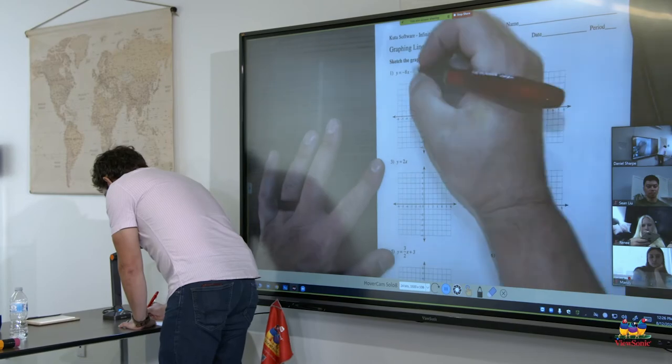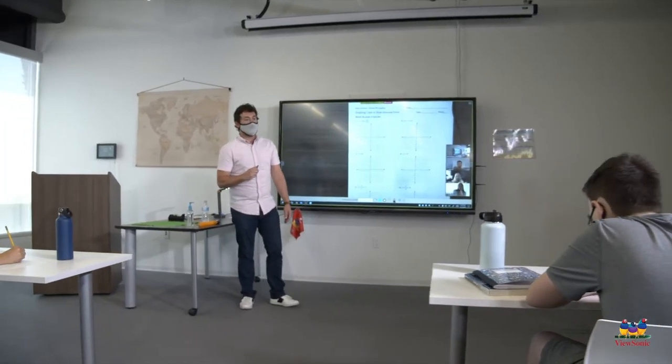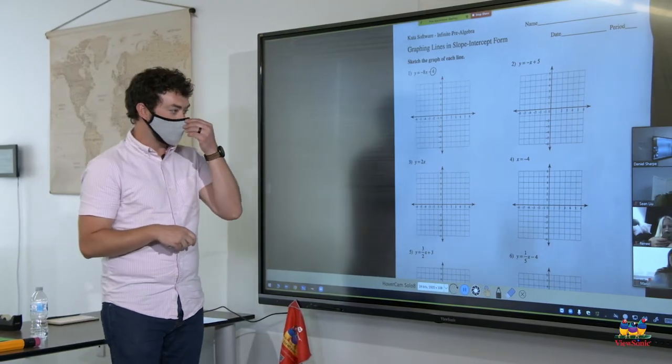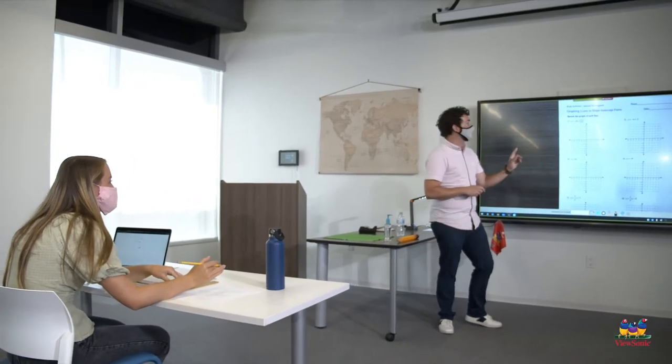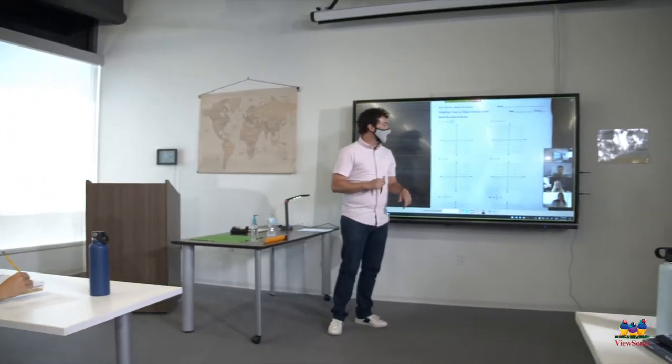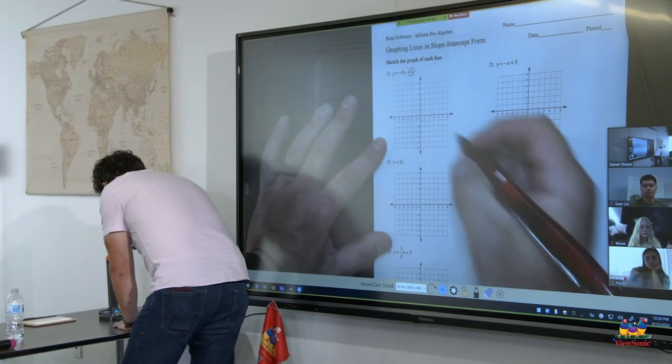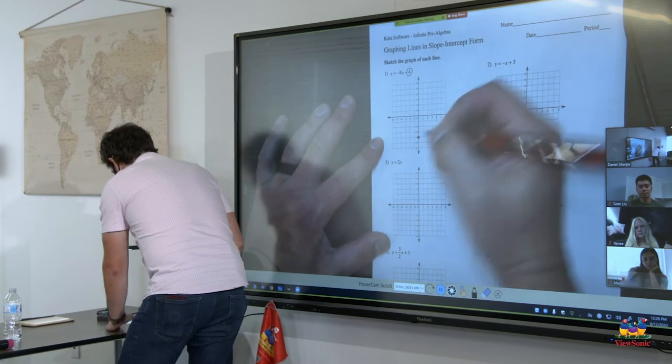Y intercept is B, which is four. But does anyone notice anything interesting about this Y intercept? Anyone in class or anyone who's virtual? You can unmute yourself. Yes. It's a negative. Did everyone at home hear that? It's a negative four. So instead of going positive on the Y axis, we actually go down to negative four. So go ahead and mark that on your worksheet.